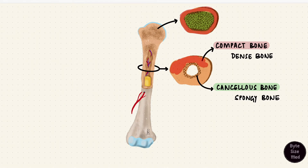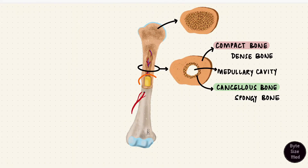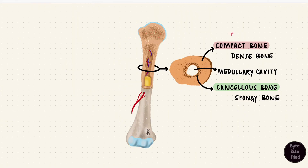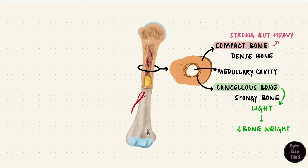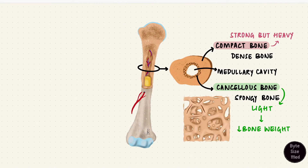The epiphyses are mostly cancellous bone with a little compact bone around them. The diaphysis is mostly compact bone with thin cancellous bone inside surrounding a central medullary cavity. Adult long bones usually have yellow bone marrow, but in some long bones the epiphyses can have red bone marrow. Compact bone is dense and can withstand forces — it's strong but heavy. Cancellous bone is lighter and spongy, balancing compact bone by reducing weight while still providing strength through the trabeculae.